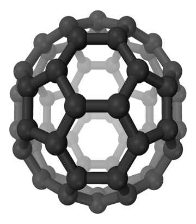When heated to the right temperatures in the Earth's crust — oil window approximately 50 to 150 degrees Celsius, gas window approximately 150 to 200 degrees Celsius, both depending on how quickly the source rock is heated — some types of kerogen release crude oil or natural gas, collectively known as hydrocarbons or fossil fuels. When such kerogens are present in high concentration in rocks such as shale, they form possible source rocks. Shales rich in kerogens that have not been heated to a sufficient temperature to release their hydrocarbons may form oil shale deposits.